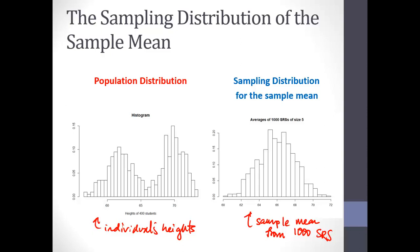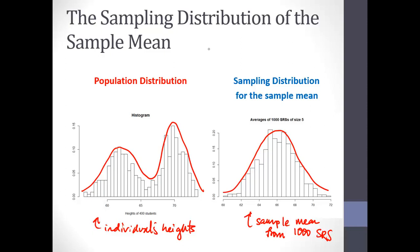Someone made the observation that something very clear is going on here — what do you notice that's different about these two histograms? The shape is extremely different. Over here in the population distribution I have a kind of bimodal thing going on, and over here in the sampling distribution I have something more bell-shaped. The shape changes, and that's something we'll capitalize on later in this chapter. Any questions on population distribution versus sampling distribution or any of these definitions?